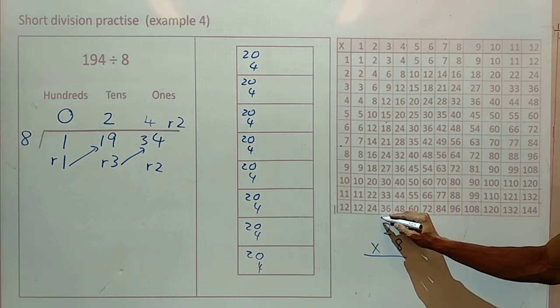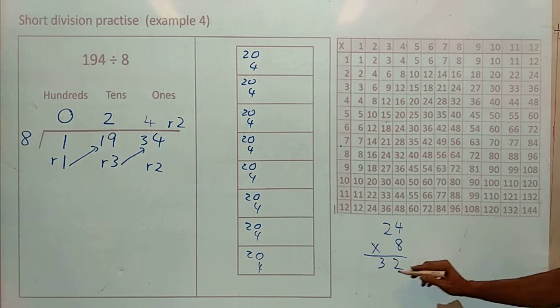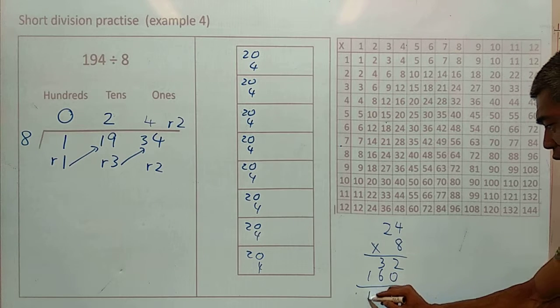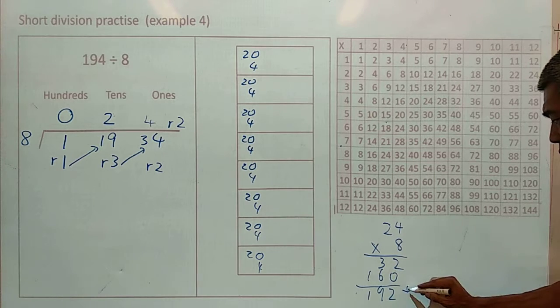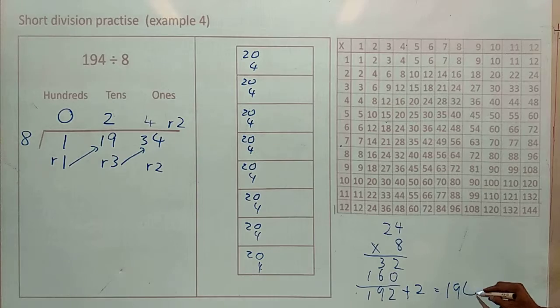4 times 8 is 32. 20 times 8 is 160. This gives me 192. I'm going to add the remainder to that. 192 plus 2 gives you 194.